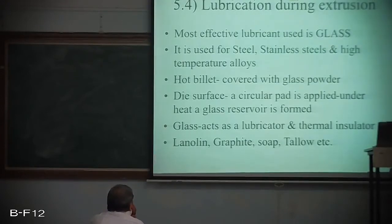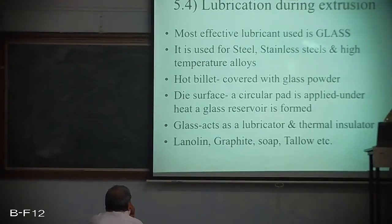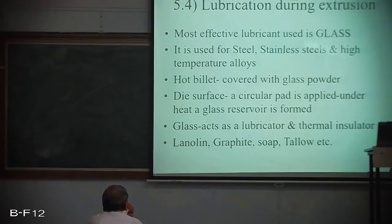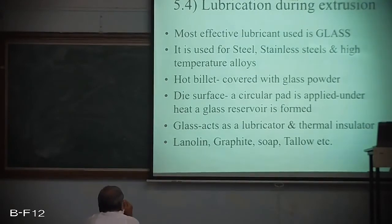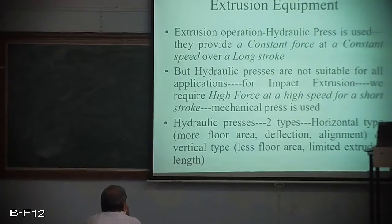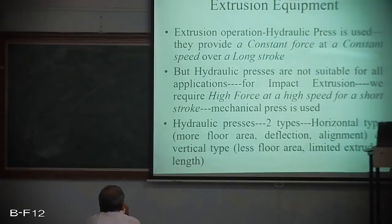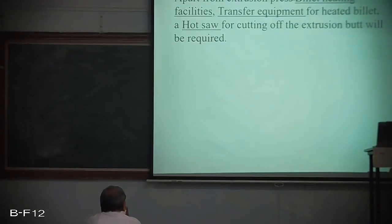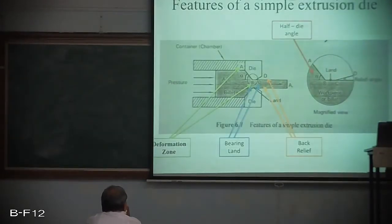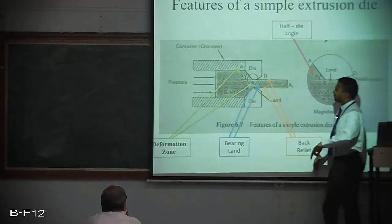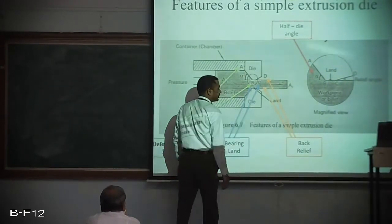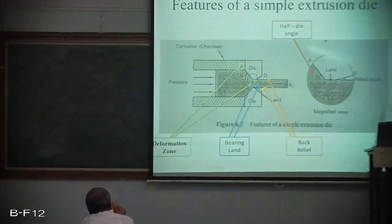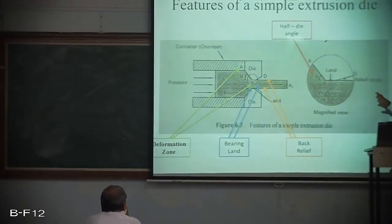Different types of lubricants include glass, lanolin, graphite, soap, tallow, etc. Different extrusion equipment types include hydraulic, mechanical, horizontal, and vertical die presses. A simple extrusion die has a deformation zone from A to B where the cross section gradually decreases. Proper design is important to obtain the desired shape and accurate dimensions.